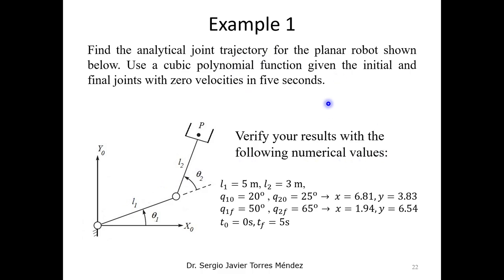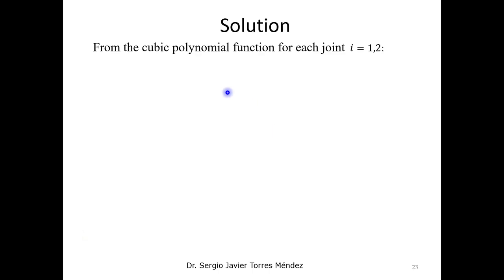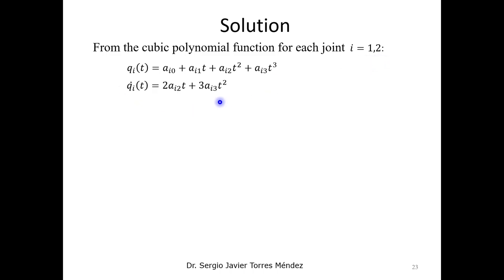Now let's apply this to a planar robotic system with two degrees of freedom. Suppose we want to move the robot from an initial position for joint variable theta1 of 20 degrees to 50 degrees, and for theta2 from 25 degrees to 65 degrees. The robot moves from 0 to 5 seconds. Using the cubic polynomial function for these two joint variables, we write the position equation, its derivative for velocity, and the second derivative for acceleration.